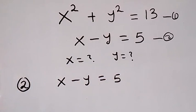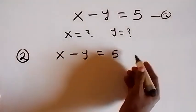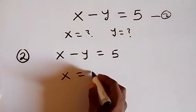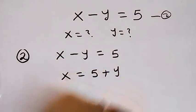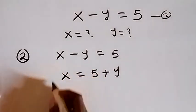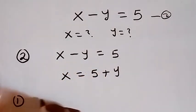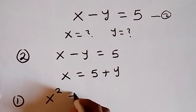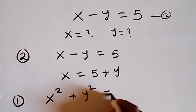Then from here, let's take minus y here and this will become x equals to 5 plus y. And then when we substitute this in equation 1, from equation 1, we have x squared plus y squared equals to 13.